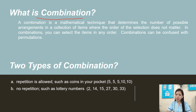Combinations can be confused with permutations. So there are two types of combinations. Letter A is repetition is allowed, such as coins in your pocket.